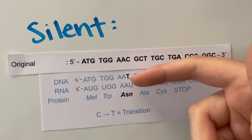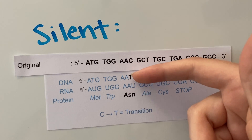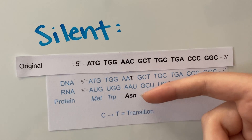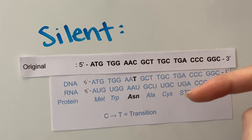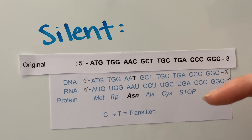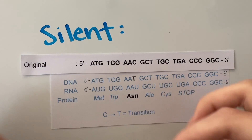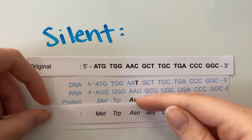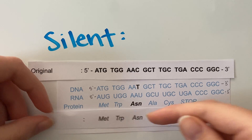Here we have the C converting into a T, which is a transition, and this will give you the exact same protein as we originally had, as you can see here.